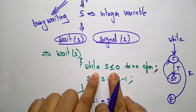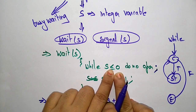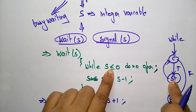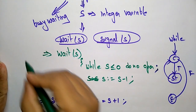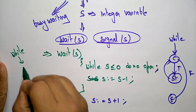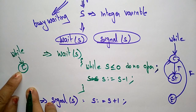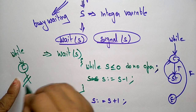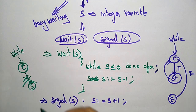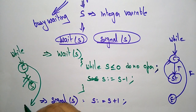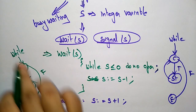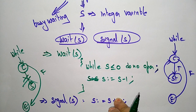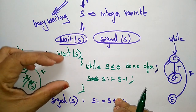Here, while S less than or equal to 0, do no operation — there is no code. So whenever the condition is satisfied, there is no code to execute. The while loop checks the condition; if satisfied it must execute a statement, but there is no statement. So compulsory it has to exit from the loop and execute the next statement present in the code. That is why we use the wait operation.